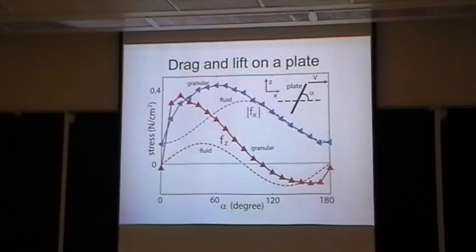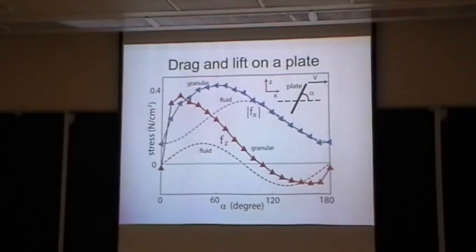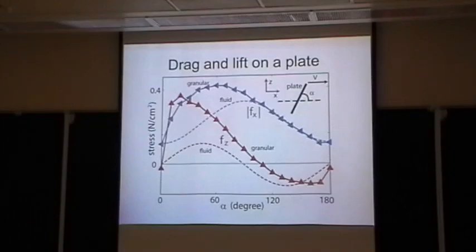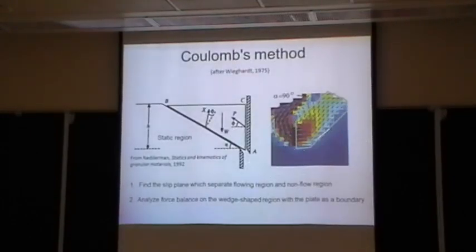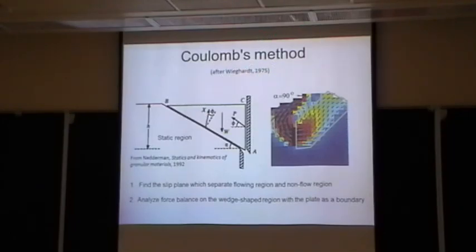An audience member asks whether the fluid comparison was near a surface. The speaker thinks not — it was in open fluid, though they're uncertain. They note interest in the near-surface fluid case. The speaker believes these granular forms relate more to shoving material off slip planes. A quick modeling approach: take the kind of wedge idea discussed yesterday — Weigart tried this in his 1975 paper. You go into your simulation, find a slip plane separating flowing from non-flowing regions, compute all the stresses on that material in the slip plane, balance those forces — assuming constant speed — and solve for the force it takes to shove that material off the plane.